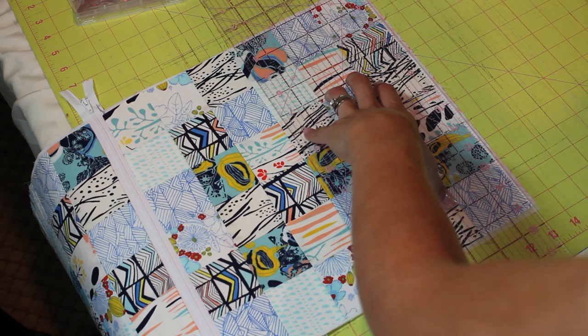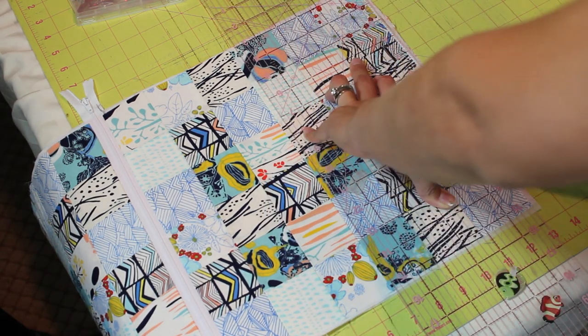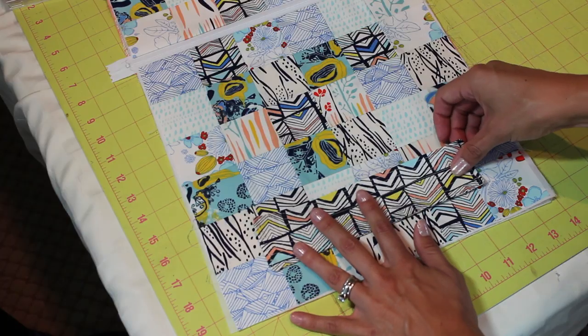So here we go. We have it nice and pressed. There might be a couple of uneven edges there at the end, so you can trim that down if you need to. It gives a nice finished look at the end.